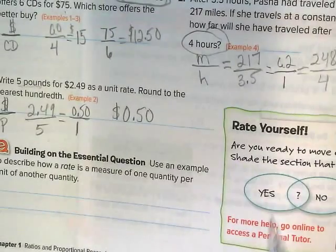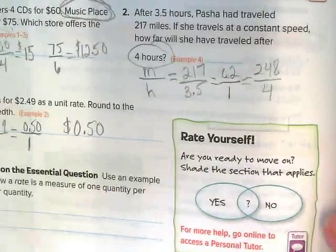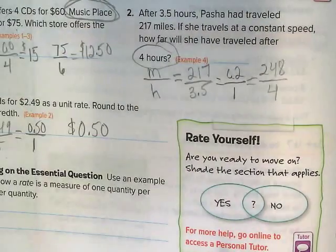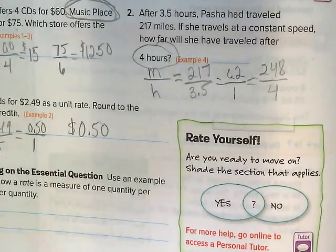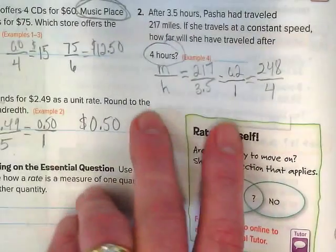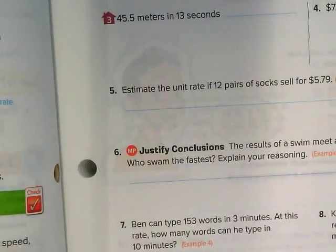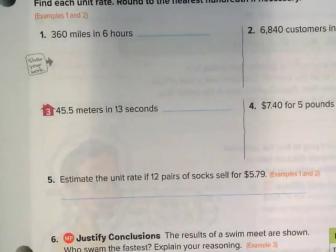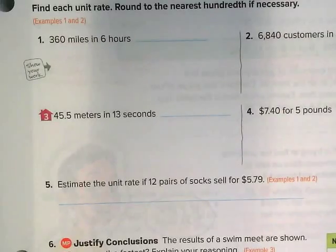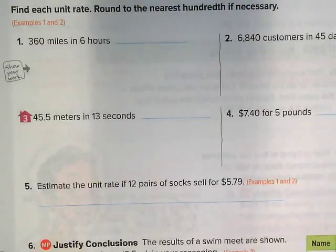Right now, I'd like you to rate yourself. Are you ready to move on? Shade one of these three sections. Once you've rated yourself, I want you to work on page 13. You're going to need a calculator. Get as many of them done before the bell rings, and we'll continue this work on Monday.